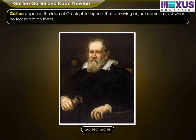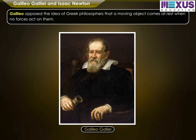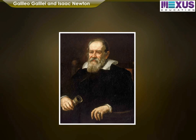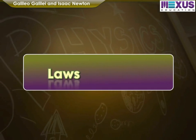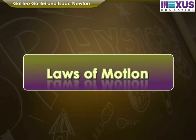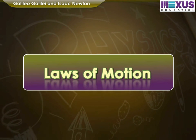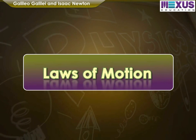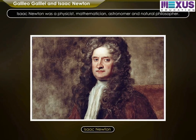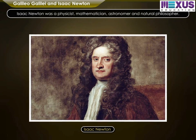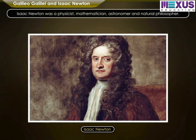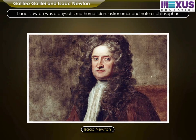Galileo and Isaac Newton worked on force and motion and proposed the laws of motion. Isaac Newton was a physicist, mathematician, astronomer, and natural philosopher.